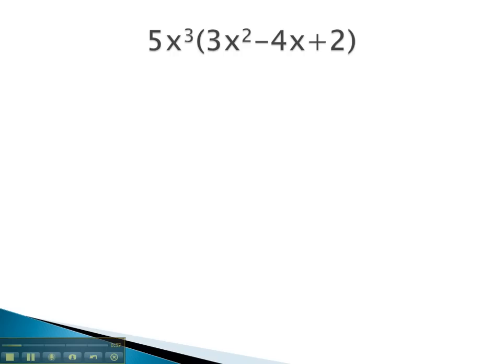So for example, if we wanted to distribute this 5x³ through, when we do 5x³ times 3x², 5 times 3 is 15, and on the x's we'll add the exponents. 3 and 2 gives us a total of 5, 15x to the 5th.